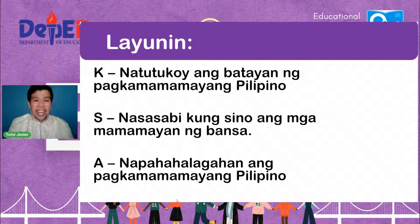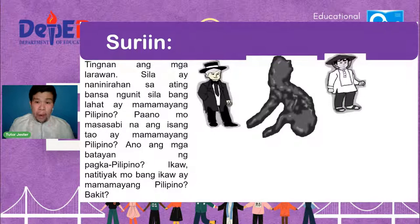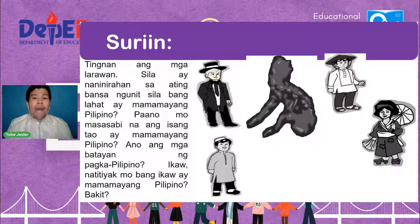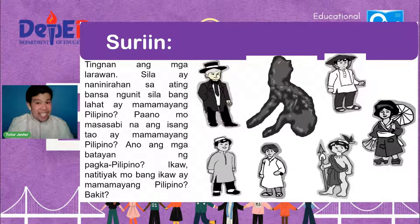Tingnan natin ang larawang ito — sila ay naninirahan sa ating bansa. Ngunit sila bang lahat ay mamamayang Pilipino? Paano mo masasabi na ang isang tao ay mamamayang Pilipino? Ano ang mga batayan ng pagiging Pilipino? May Pilipino, mayroong iba't-ibang mga lahi, kaya ang aking pagbati ay iba't-ibang wika o diyalekto.